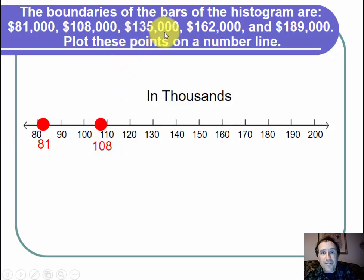Then I have 135,000. That will be halfway between 130 and 140. So there's 135.